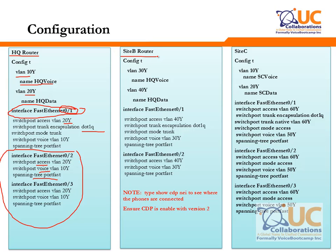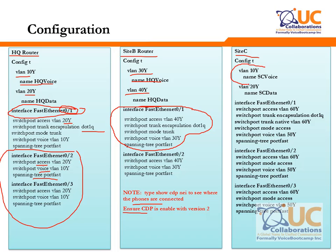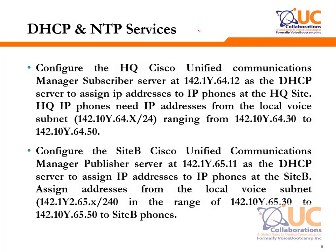On Site B, keep in mind there is an EtherSwitch module built in. Define VLAN 302 and VLAN 402, and make sure to name them correctly as Site B, not HQ. Site B has only one phone, so you only need to configure one port. Always run 'show cdp neighbors' to see where the phones are connected — the actual port may differ from the documentation. Ensure CDP is enabled because without CDP, Cisco phones will not function properly. For Site C, define VLANs similarly and remember the router port must be trunked; the remaining ports use access VLAN and voice VLAN commands.